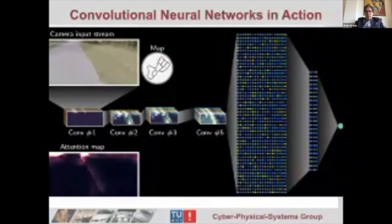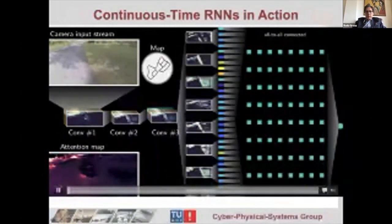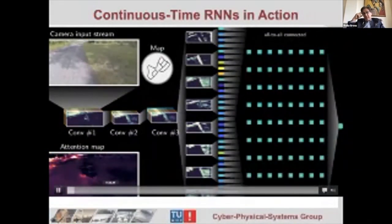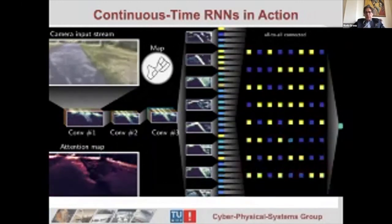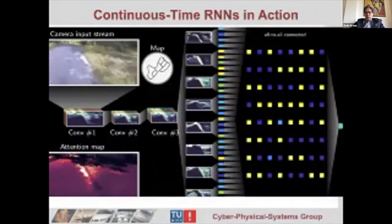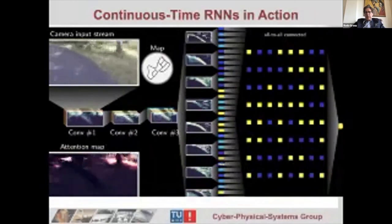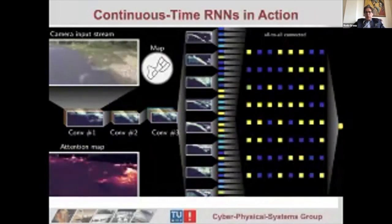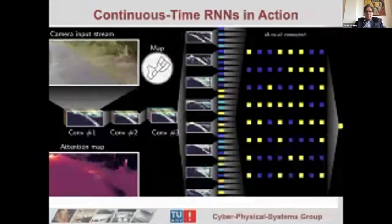You can replace the controller with something called continuous time recurrent neural networks. In this case, you have 64 of them and they are connected all-to-all, so it's very hard to explain what they are doing—it's almost impossible. Again, when they take the curve, they get in trouble. It went out of the street and then had to come back, so you see the video stopped for a second.